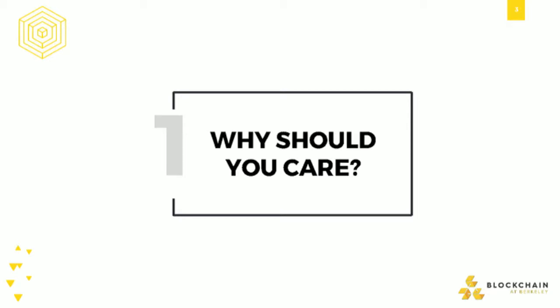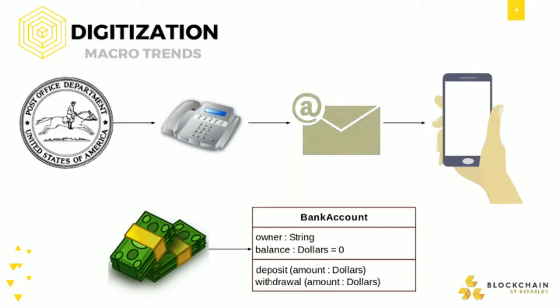Let's talk about some of the main trends that we see in technology as a whole. The first is digitization. We can look at this through communication — we went from the Pony Express to telephones to email, and now we have instant messaging and everything's on your smartphone. Communication has gotten more and more digitized. We see that this trend has come over to money as well: 90% of money now exists in the digital realm, with only 10% existing in the physical realm.